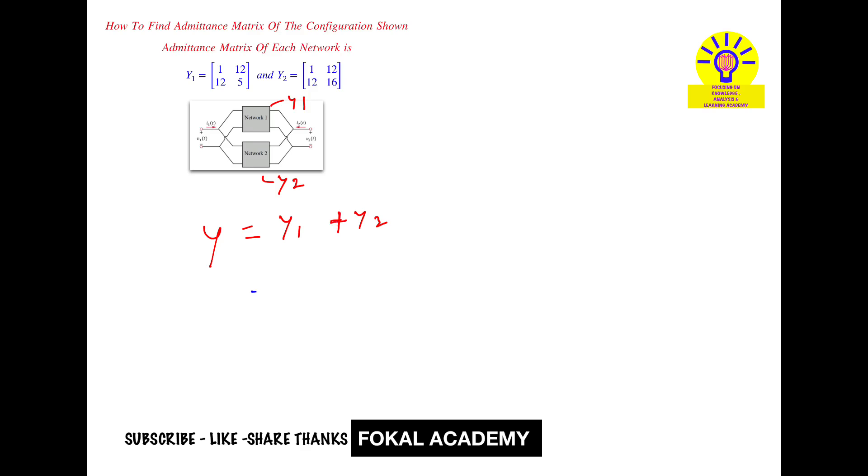So that's equal to y1 which is [1, 2; 2, 5] plus y2 which is [1, 2; 2, 16]. So these are two matrices. Now add these two matrices by corresponding elements: so 1 plus 1 = 2, 2 plus 2 = 4, 2 plus 2 = 4, and 16 plus 5 = 21. So this is the overall admittance matrix for the given network.